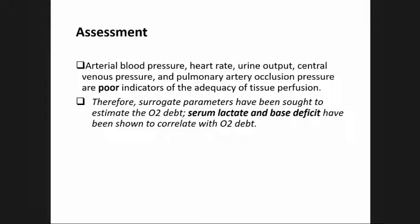For assessment, arterial blood pressure, heart rate, urine output, central venous pressure, and pulmonary artery occlusion pressure are poor indicators of the adequacy of perfusion. Surrogate parameters have been developed to estimate oxygen debt; serum lactate and base deficit have been shown to correlate with oxygen debt.